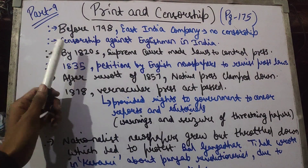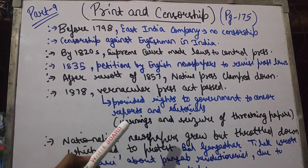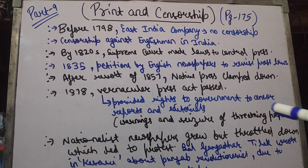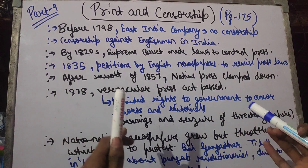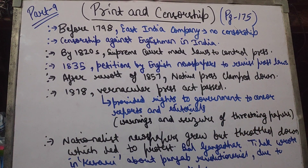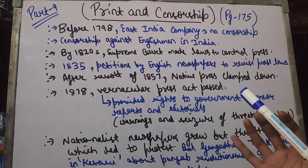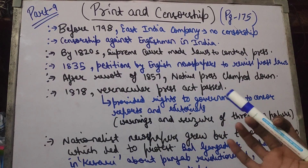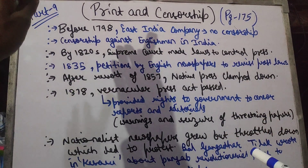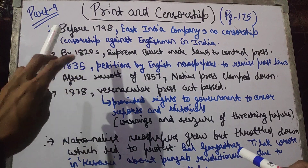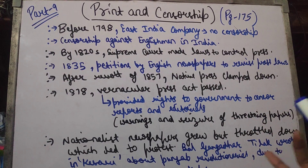First of all, if we talk about 1798, the East India Company was running most of the parts and they did not put any censorship. But the first censorship came, and it was also against the people in India — the Englishmen who had secret news or inside news. They were released. The first censorship was against Englishmen who came to India and were talking about policies and the monopoly.